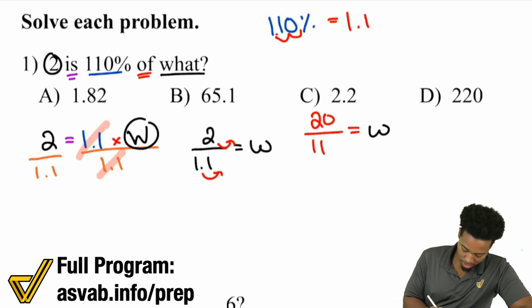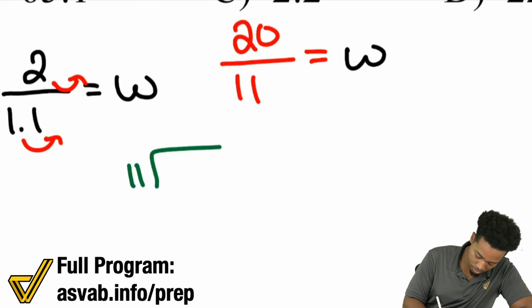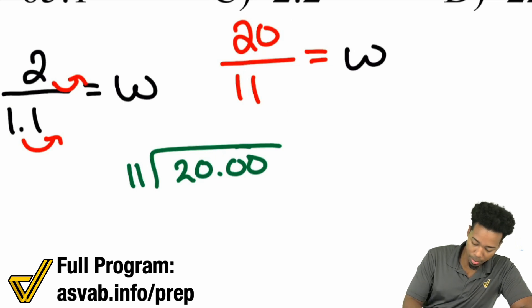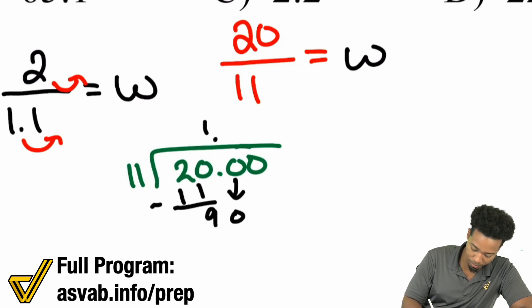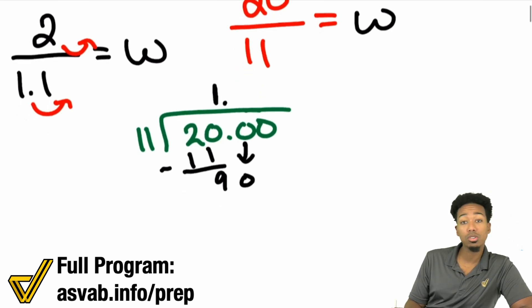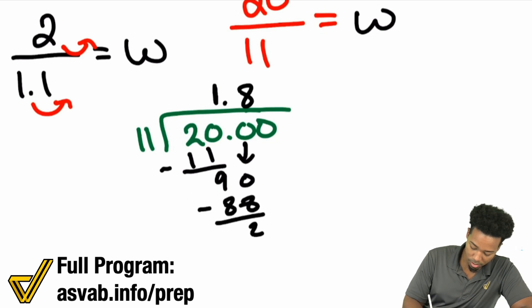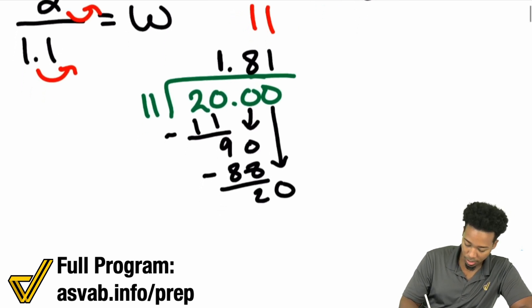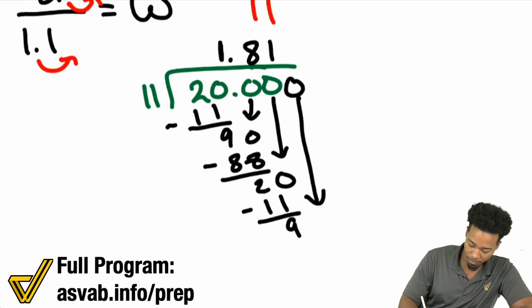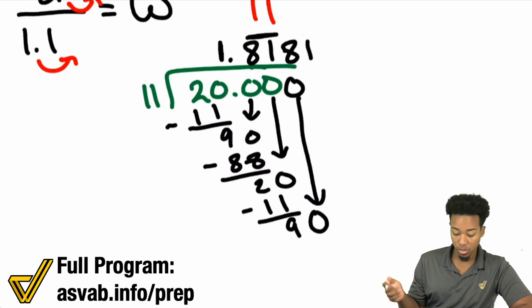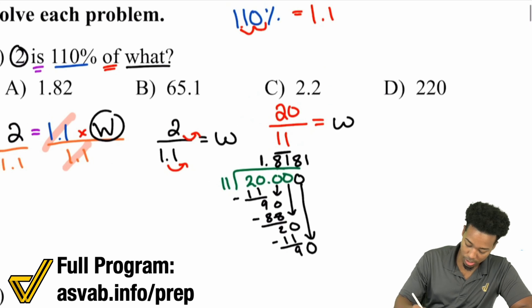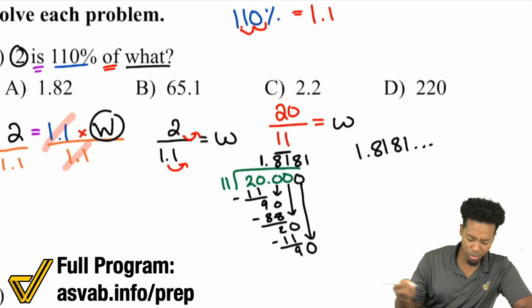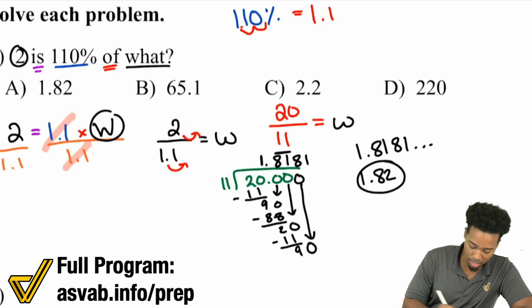Let's put in the time and calculate. 11 going into 20: 11 goes into 20 one time. Take away 11, you have 9. Bring that 0 down, put the decimal where it belongs. 11 goes into 90 — that's 8 times because 8 times 11 is 88. Bring that 2 and 0 down — 11 goes into 20, and we see a repeating pattern. It's going to be 1.818181... repeating forever. So round that off to two decimal places: 1.82.